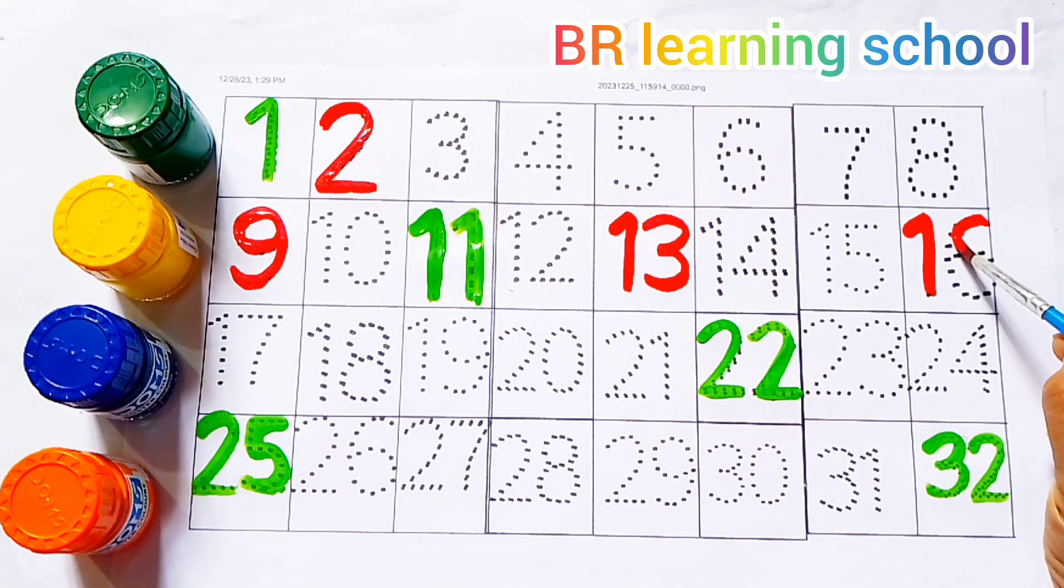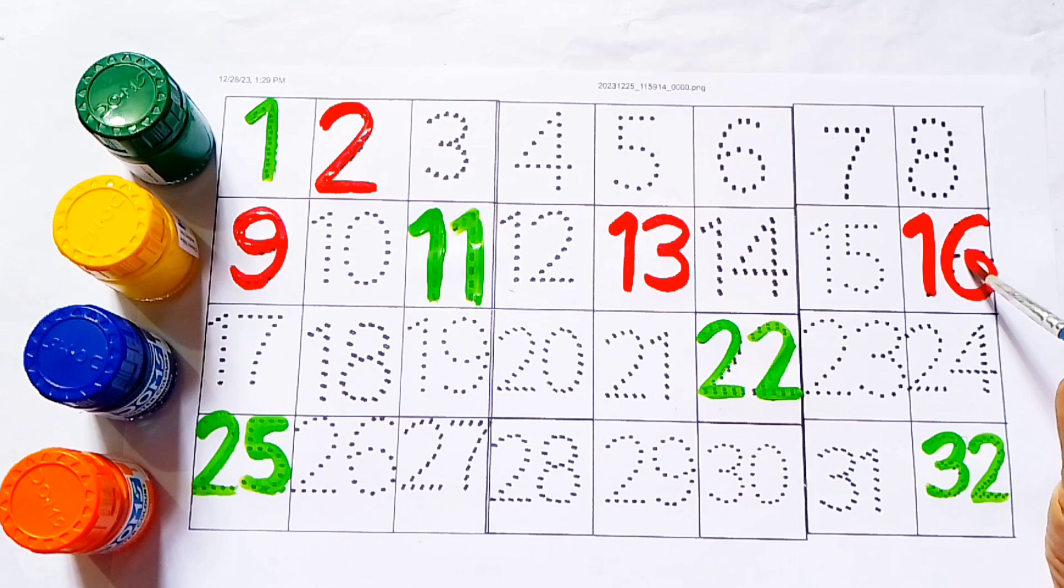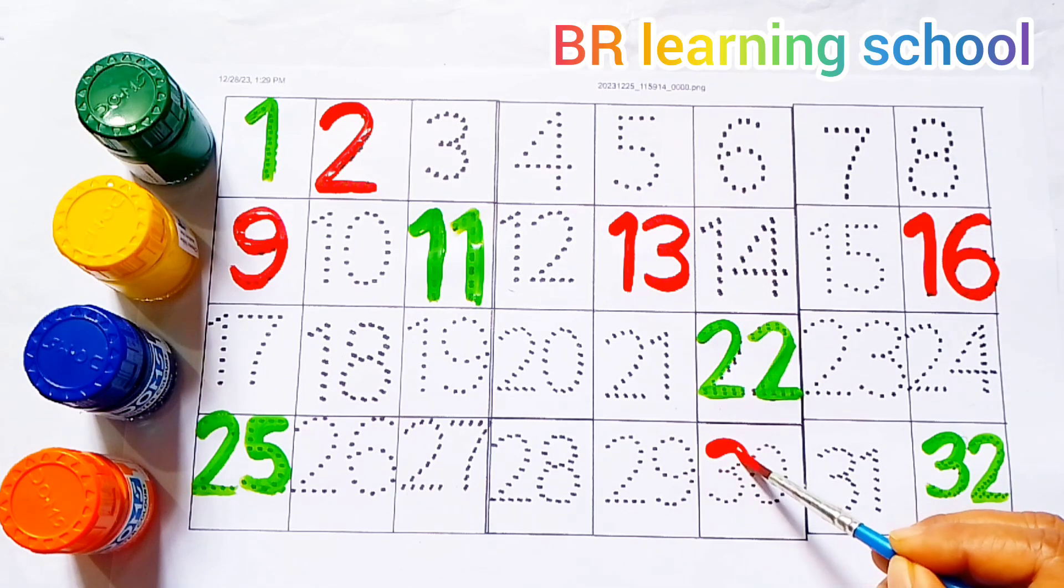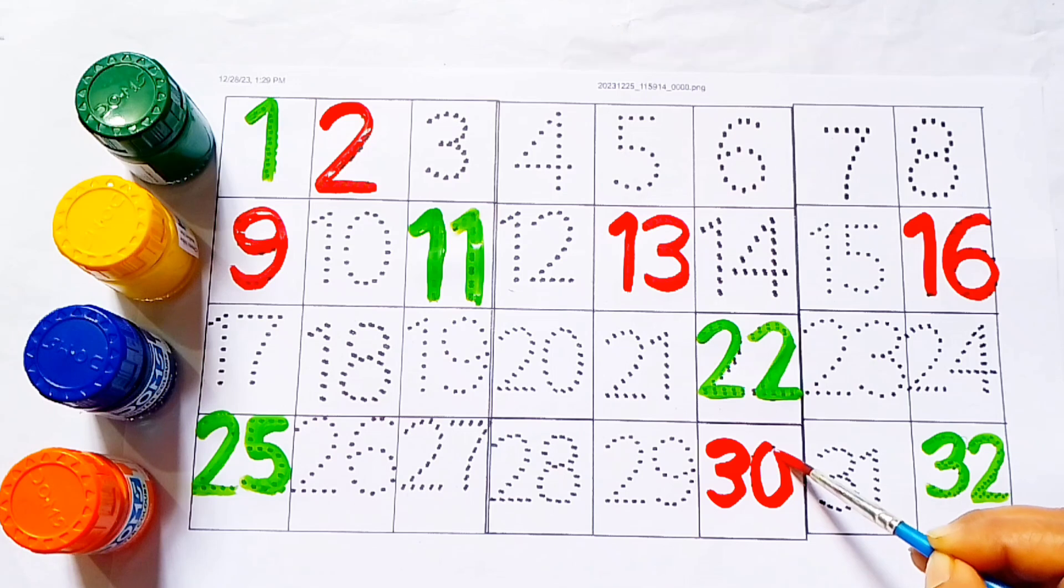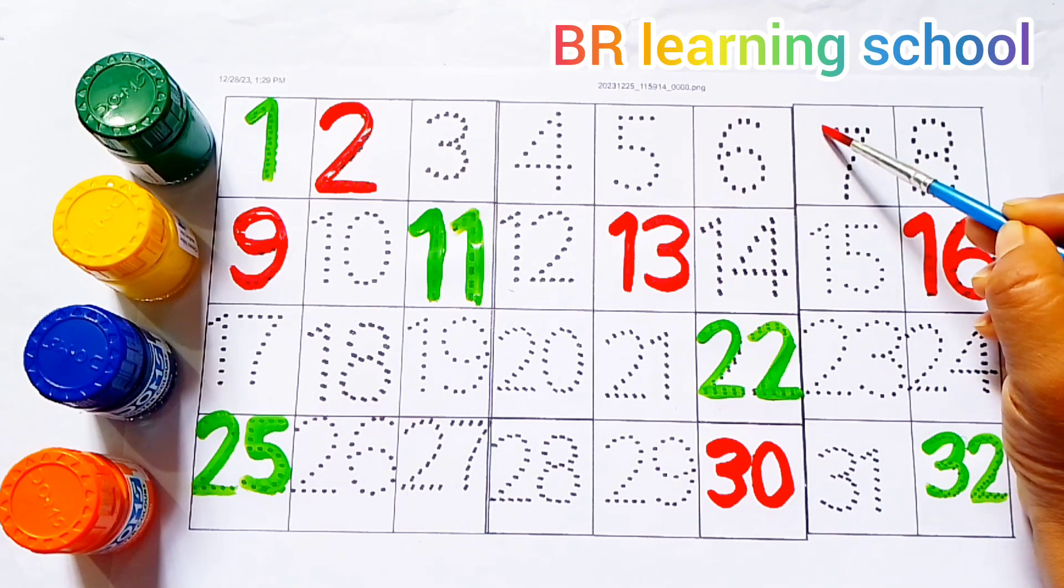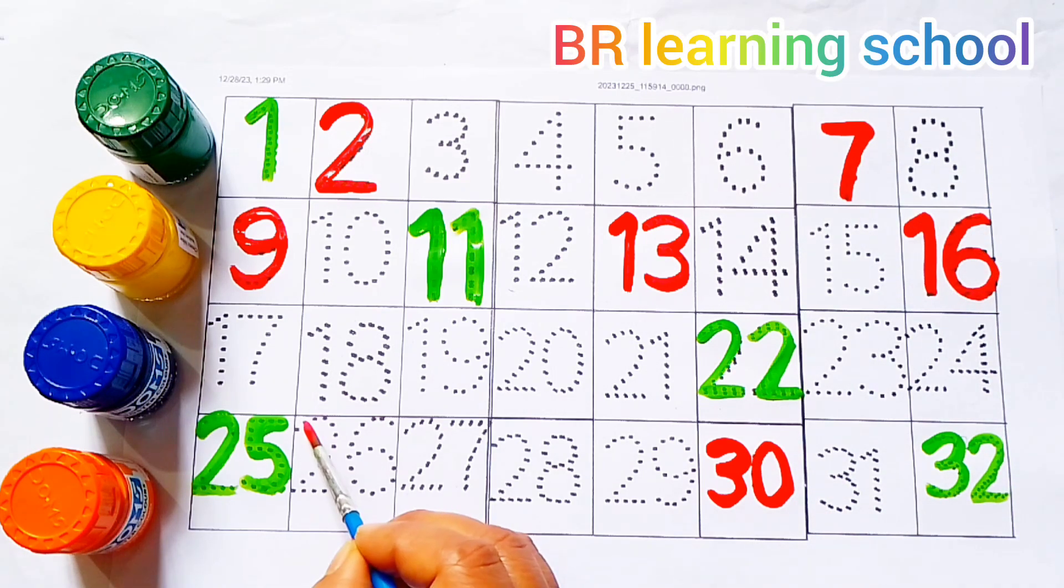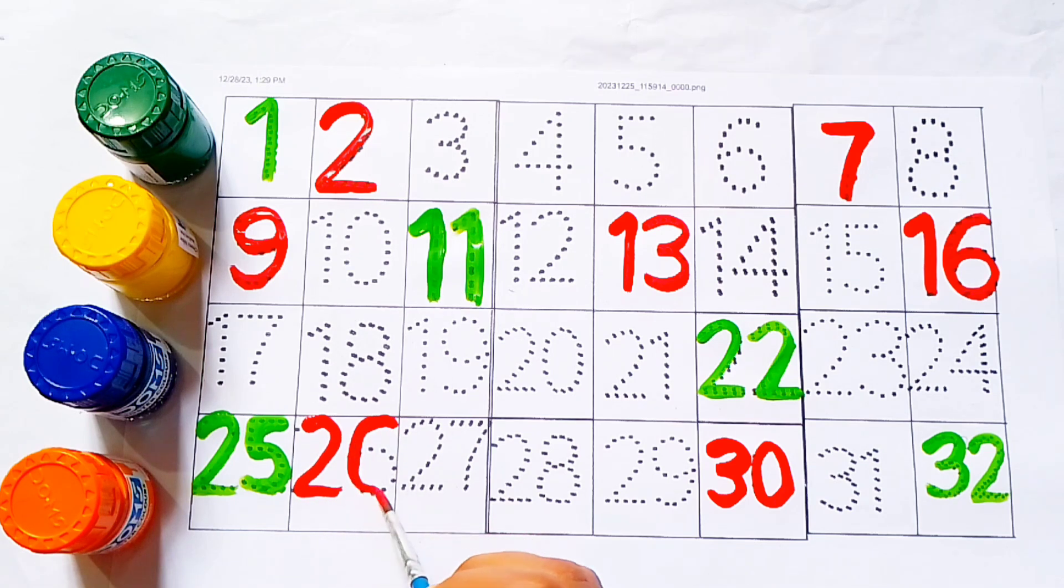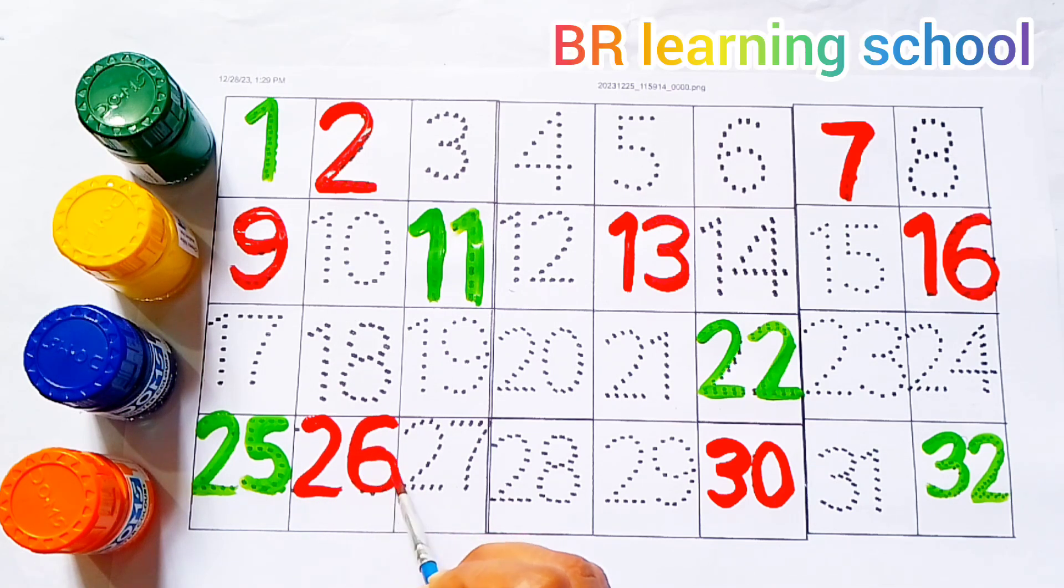16, 16. 1, 6, 16. 30, 30. 7, 7. 26, 26. 2, 6, 26.